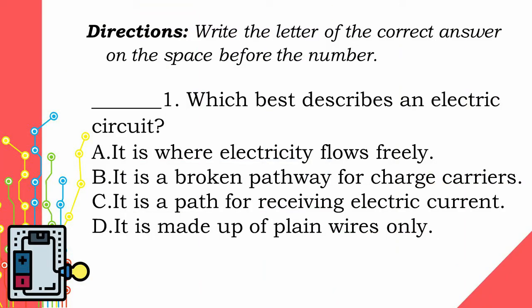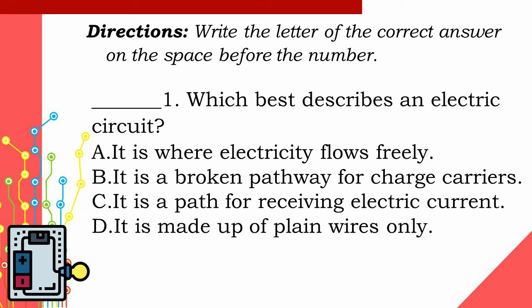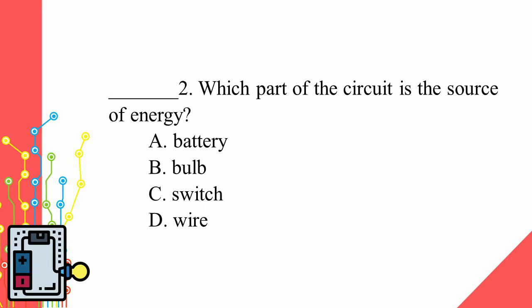Let's see if you met our target. Prepare a paper and pen and write the letter only. Number 1: Which best describes an electric circuit? A. It is where electricity flows freely. B. It is a broken pathway for charge carriers. C. It is a path for receiving electric current. D. It is made up of plain wires only. Number 2: Which part of the circuit is the source of energy? A. Battery. B. Bulb. C. Switch. D. Wire.